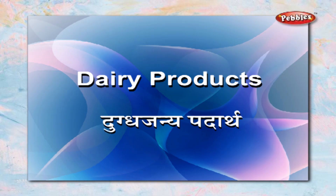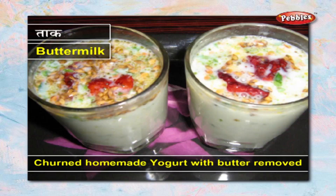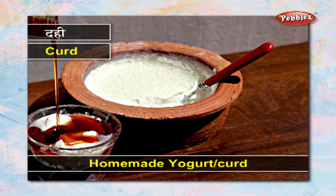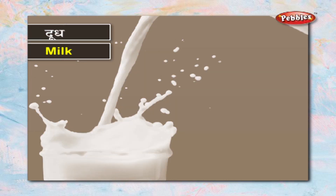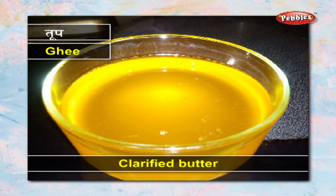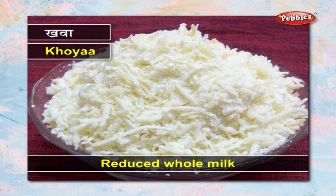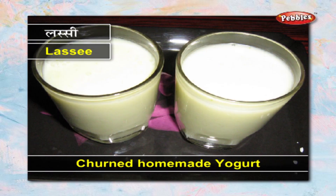Let us learn the names for dairy products. दुग्धजन्य पदार्थ - ताक. दही. दूध. तूप. खवा. लस्सी.